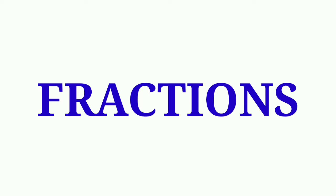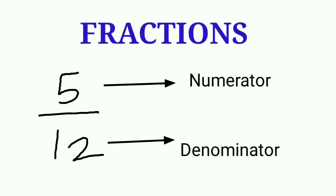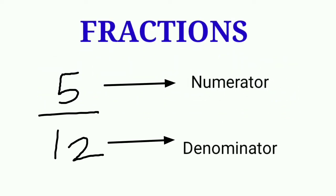Fraction. A fraction means a part of a group or of a region. 5 upon 12 is a fraction. We read it as 5 twelfths. Here 5 is called the numerator and 12 is called the denominator.